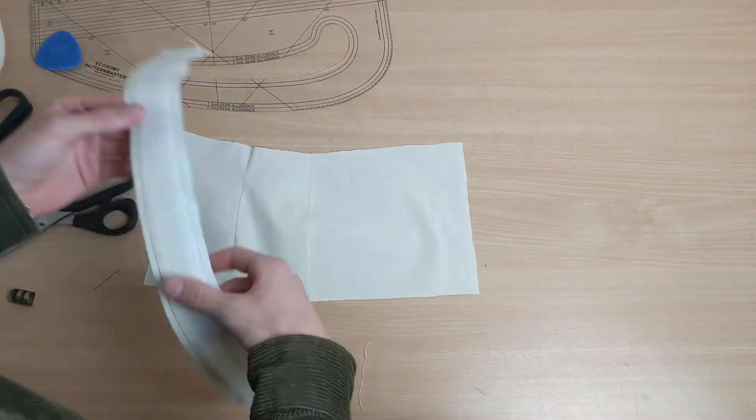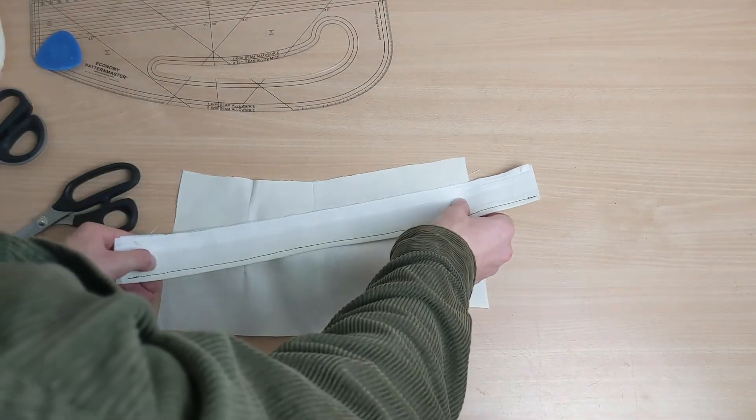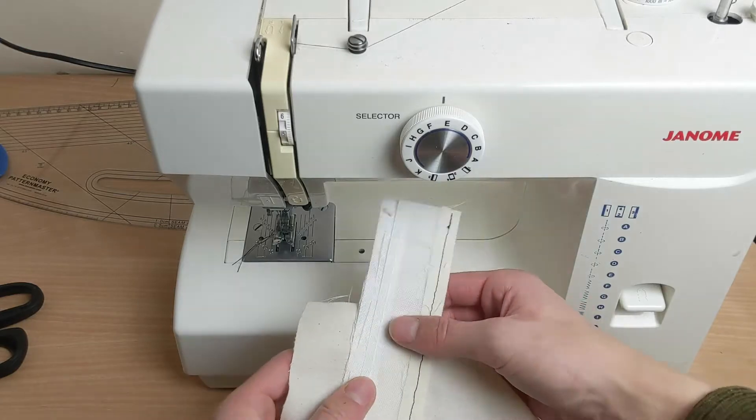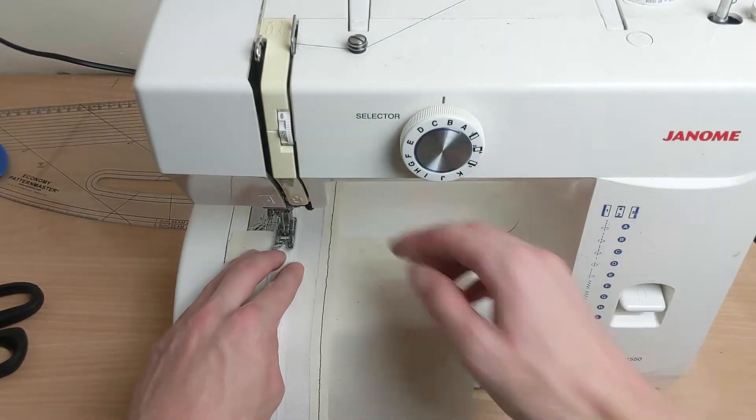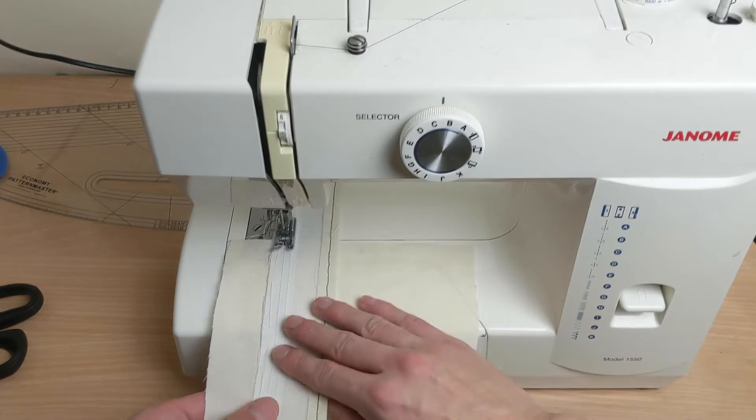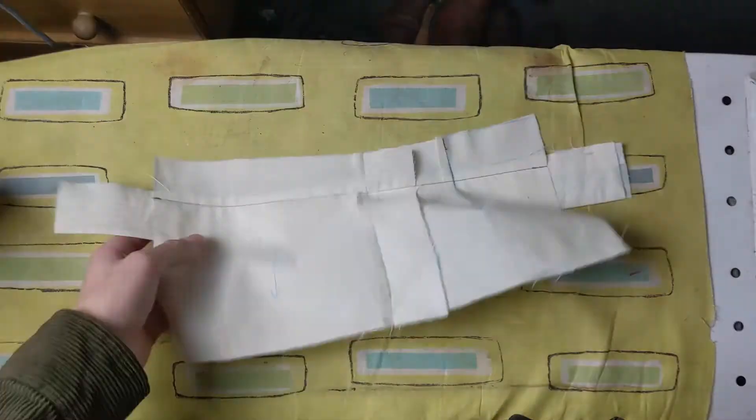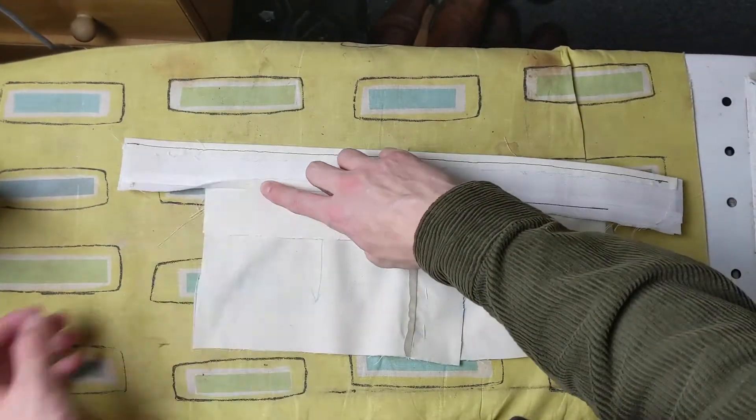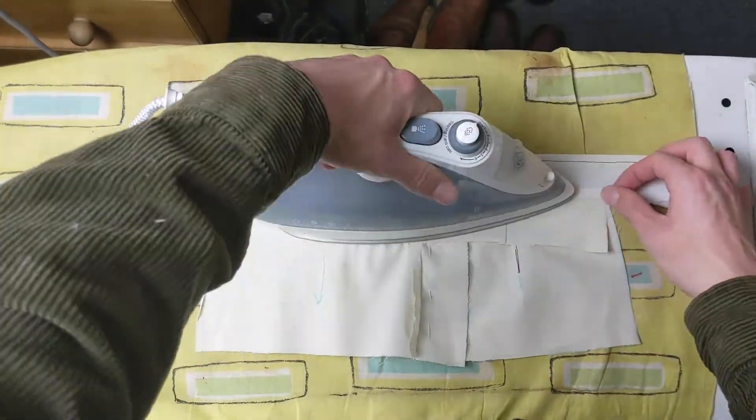Line the bottom of the waistband up against the marked, stitched, or basted line on the trouser, and they're being sewn together right at the point that the light canvas meets the heavy canvas, so it's a one centimeter seam allowance. Iron the seam open.